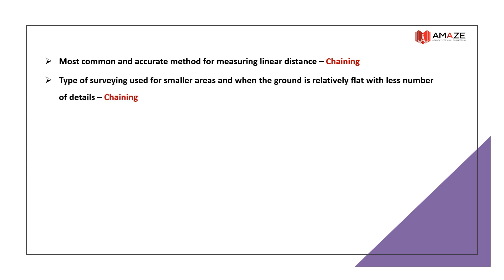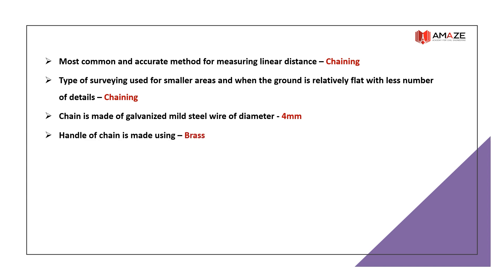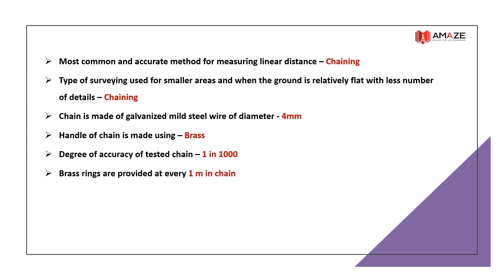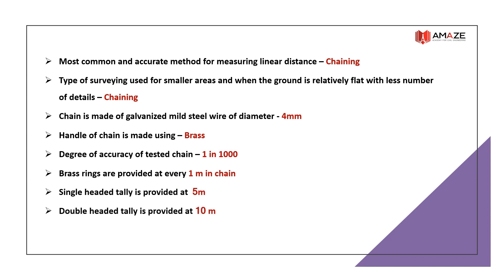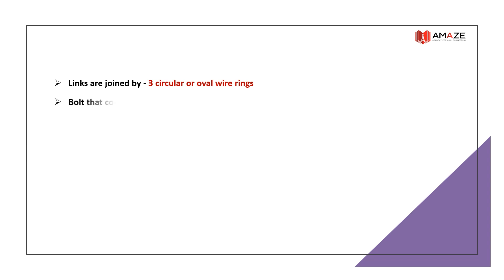Chaining is used for smaller areas when the ground is relatively flat with fewer details. A chain is made of galvanized mild steel wire of diameter 4 mm, and the handle of the chain is made using brass. The degree of accuracy of a tested chain is 1 in 1000. Brass rings are provided at every 1 meter in the chain; single-headed tallies at 5 meters and double-headed tallies at 10 meters. Links are joined by three circular or oval wire rings, and the bolt connecting the brass handle to the link is called an eye bolt.